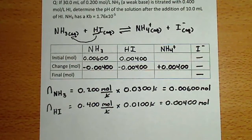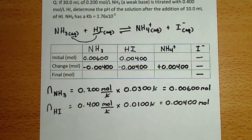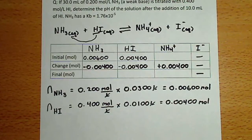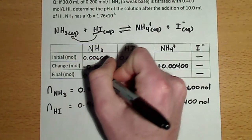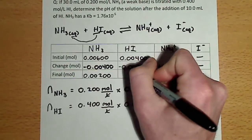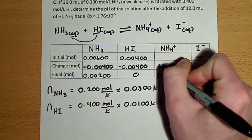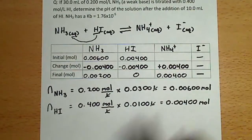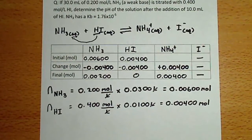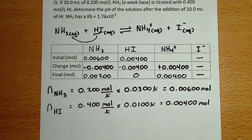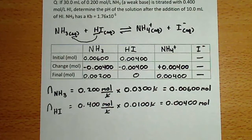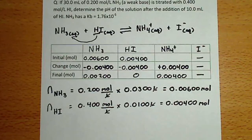Now that I know the initial and change portions of my ICF table, I can finalize it by solving for the final molar amounts. We can see that we have ammonia and ammonium remaining after this reaction has occurred. We could represent this using the reaction of ammonia and water, forming ammonium and hydroxide ion. By doing that, we give ourselves the opportunity to solve for hydroxide ion concentration, which will allow us to solve for pH.